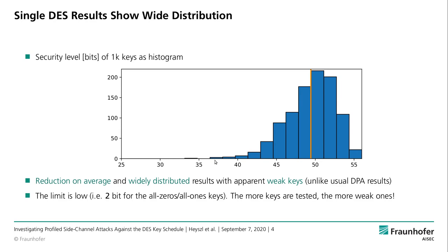We also see significantly lower security levels. We tested very special keys — a key with all zeros and a key with all ones — and found that the resulting security level is as low as two bits. Since this is a distribution, the more keys we test, the more we find with exceptionally low security levels.